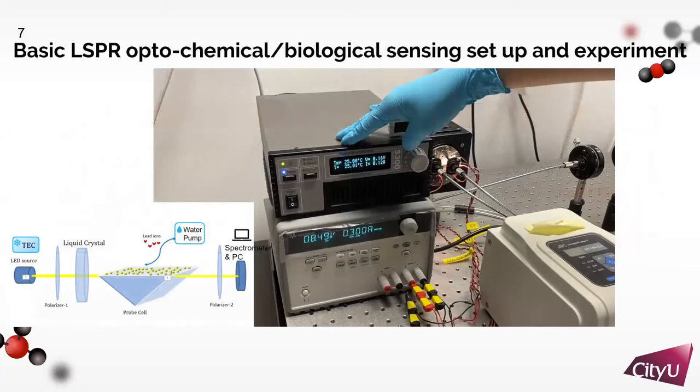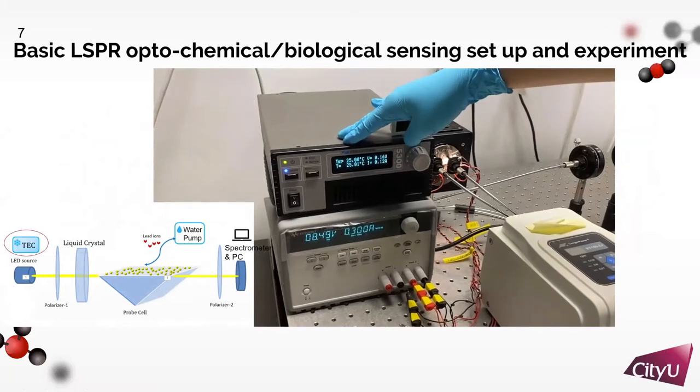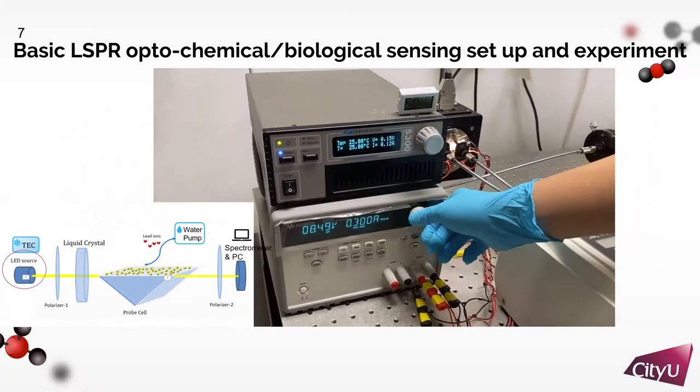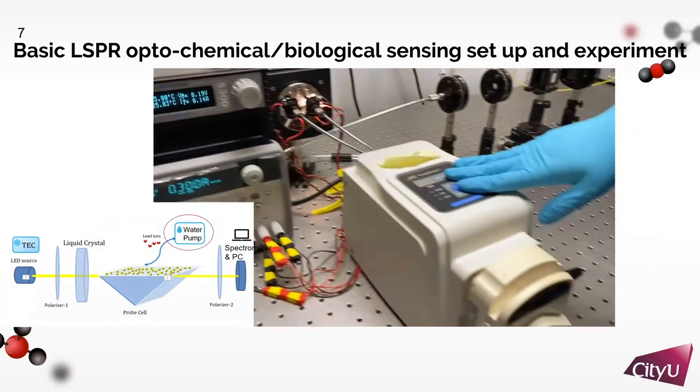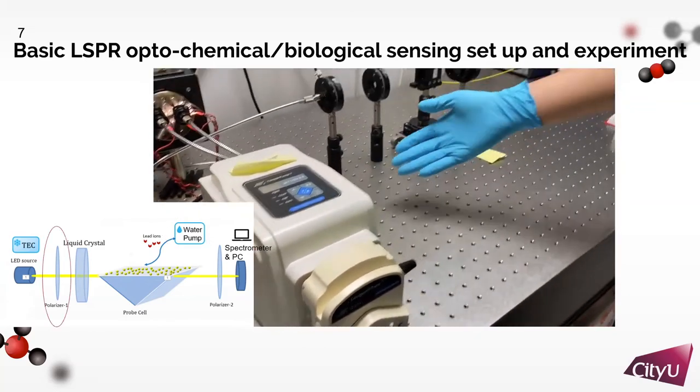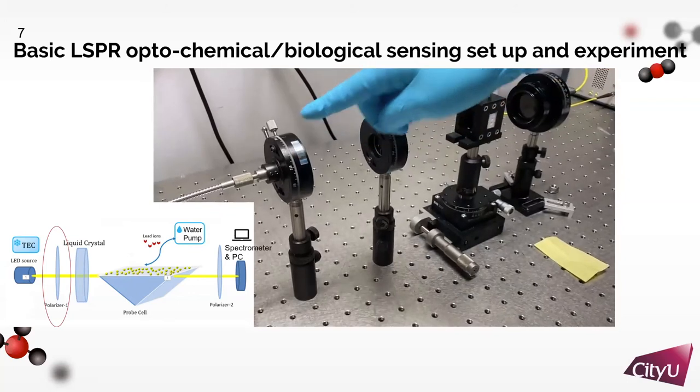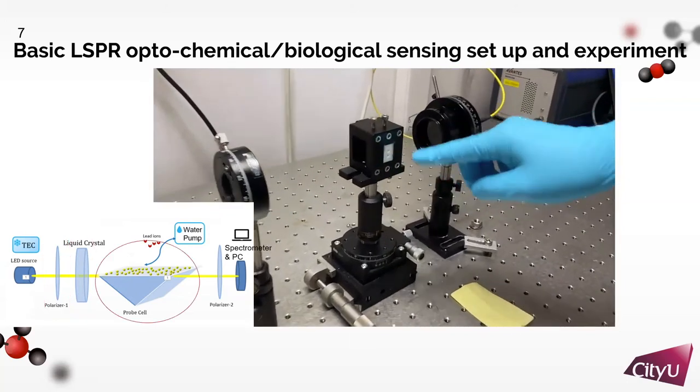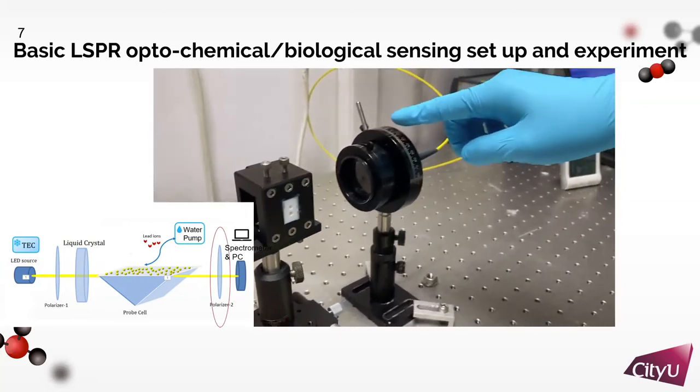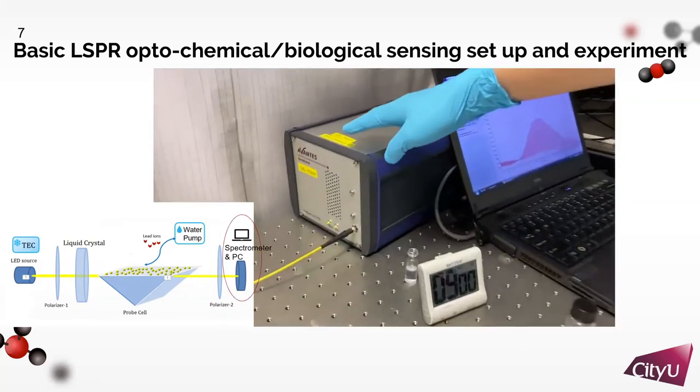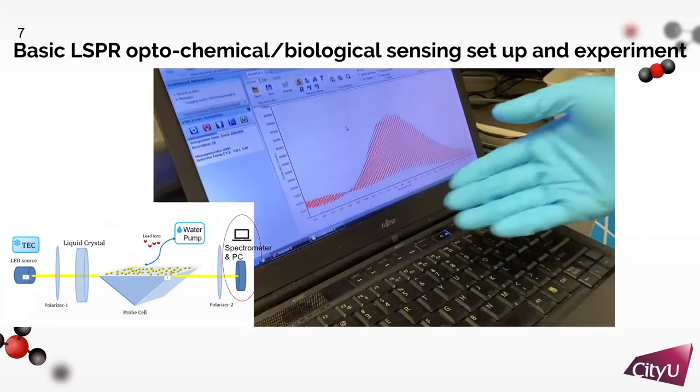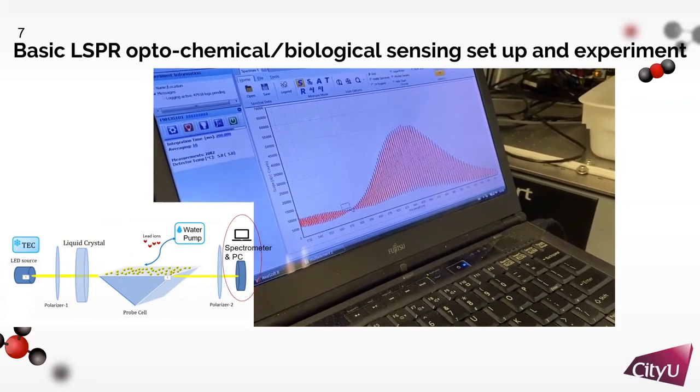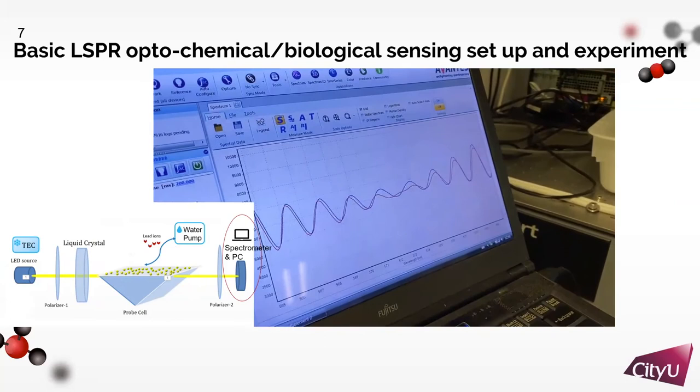This video shows the experiments done in our lab. This is the temperature control for the light source below. We are using a white light source to cover enough frequency of the spectrum for detection. We can increase the current to have higher intensity of light. This is the water pump for pumping the solution into the system. These black sensors are polarizers, which are used to control the light path to the probe cell. The gold chip with gold nano-islands is set here. This is the probe cell that allows the target sample to react with the sensing surface. Here is an optical fiber receiving the reflected light. The spectrometer will record the intensity of the light during the experiment along with the time. After the experiment, we can process the data to see the variation of the light and analyze the result.